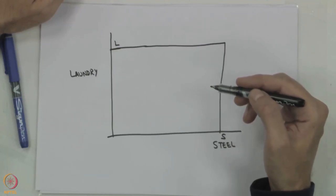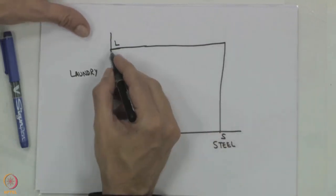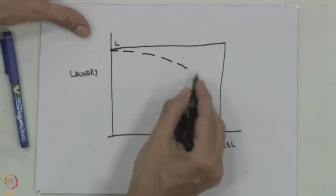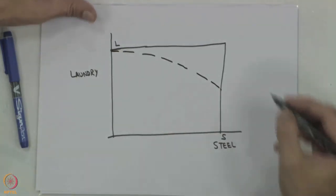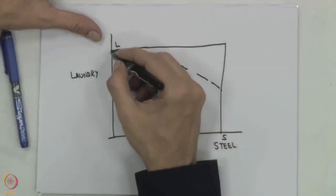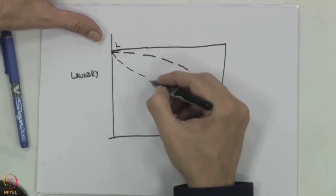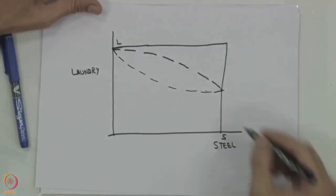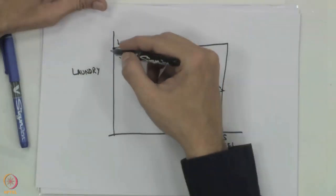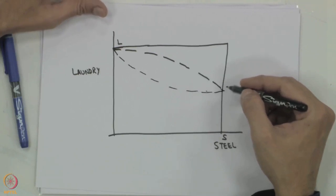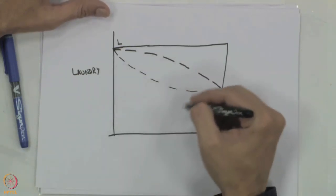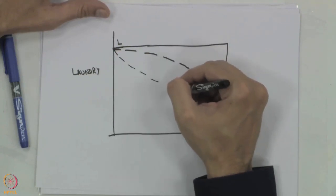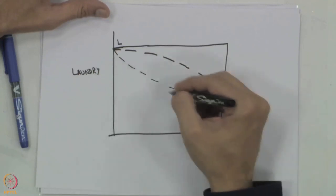This is a negative externality that could take the form of a modest or weak externality, or a strong externality where production is more severely affected. As the quantity of steel produced increases, the output of the laundry decreases. Despite the laundry not planning for it, its output gets affected and instead of maximum L, we are now only able to produce a smaller value as a function of S.